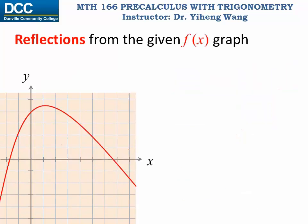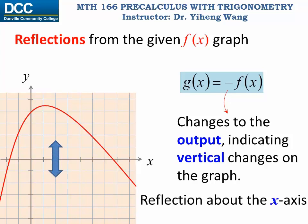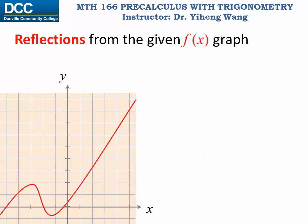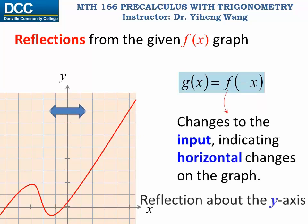Let's look at another type of transformation: reflections. Based on the given graph of f, if we wish to sketch g(x) = -f(x), notice this change is applied to the output, indicating a vertical reflection about the x-axis. If we want to sketch g(x) = f(-x), the negative sign is inside the parentheses, meaning there is a change to the input, indicating a horizontal reflection about the y-axis.